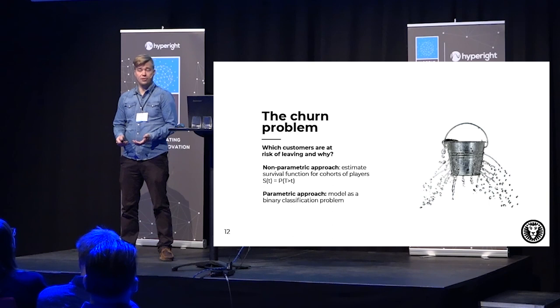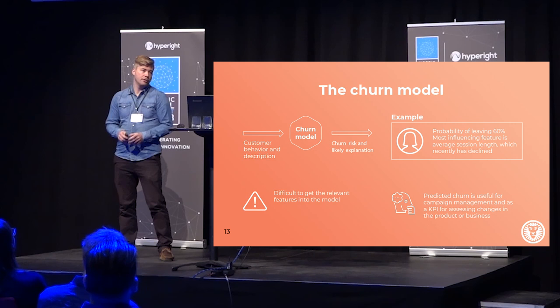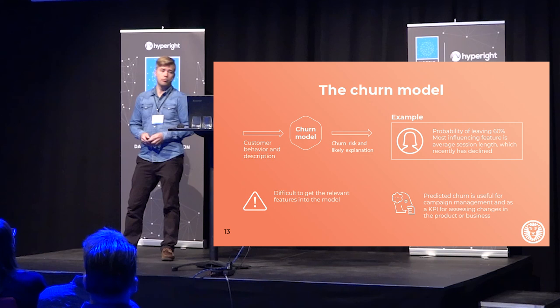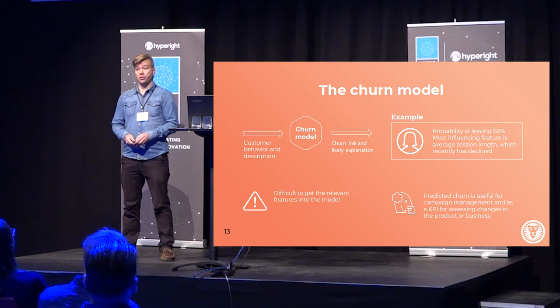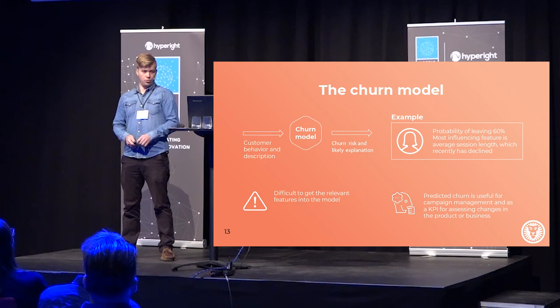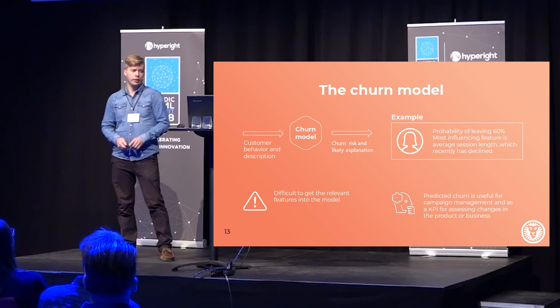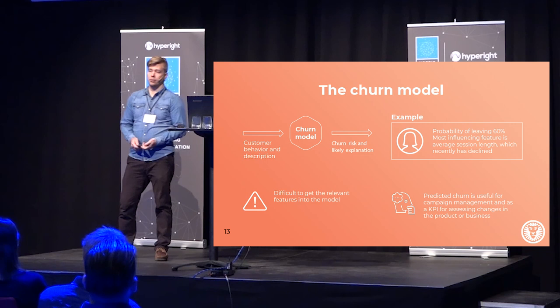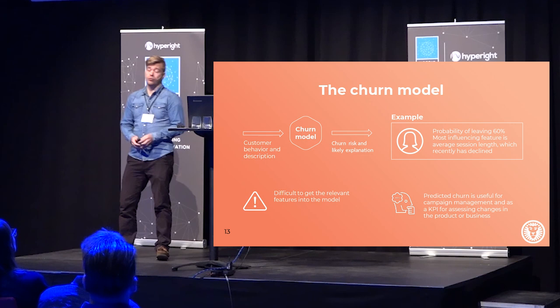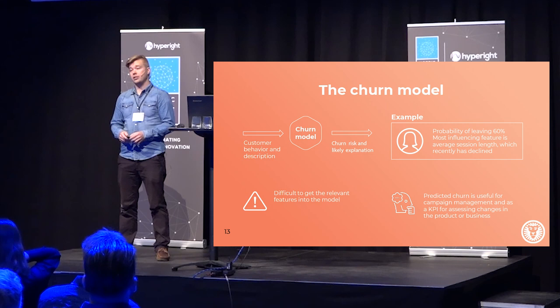It's also possible to use the parametric approach we saw for the attribution problem and model this as a binary prediction problem. More generally, we stick in customer behavior and descriptions into the churn model, and the model tells us what the risk is for each individual player and what is the most likely explanation. Here's an example: this customer has a 50-60% chance of leaving, and this seems to be due to session lengths that have been decreasing lately. Again, it's difficult to get all the features into this model — there's a lot of information about customers we just don't have. Maybe things change on their side, maybe they get separated, some animal passes away — this will just not be in the data. This model is really useful for campaign management and also for assessing changes in product.